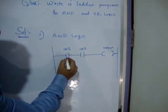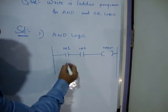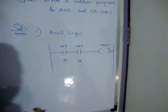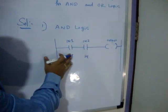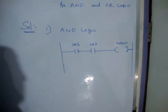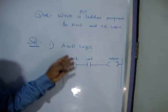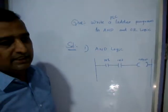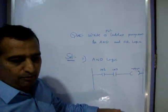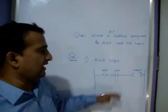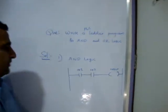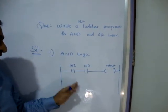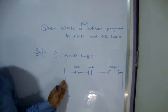When both inputs close — when both are ON — then the output is ON. This is the AND gate. The application of the AND gate is in a press machine: if both input buttons are pressed by both hands, then only the press will start.